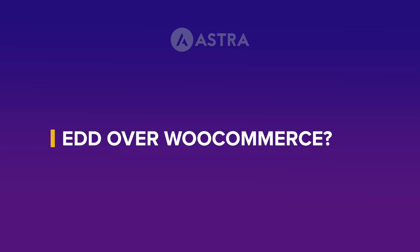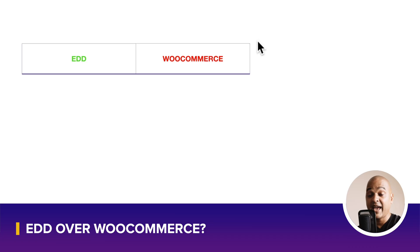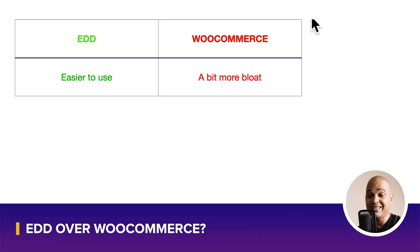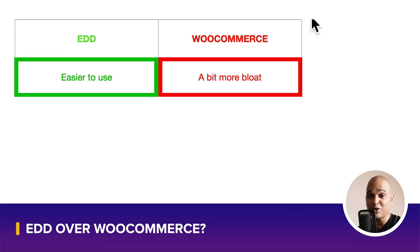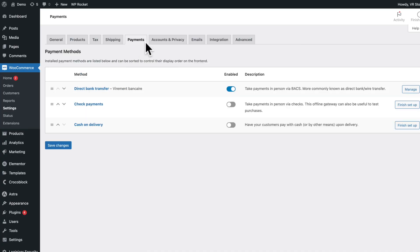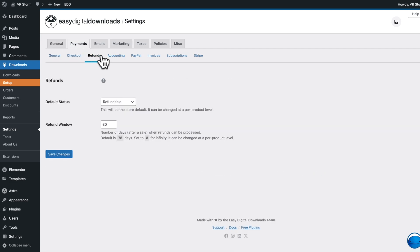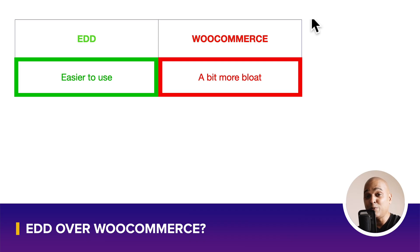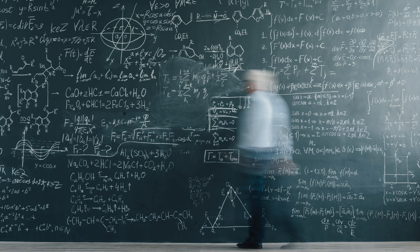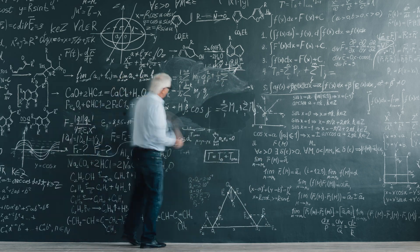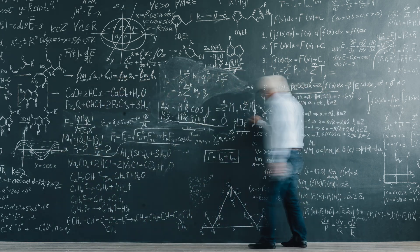Let's start with why you would choose EDD over WooCommerce. The first reason is that EDD is slightly easier to use. I say slightly because they both come with a lot of options, but especially when it comes to digital downloads — well, it's in the name — it's made to be easier to just create products and get started. Whereas with WooCommerce, it feels like you first have to deal with a lot of things that have nothing to do with digital products.